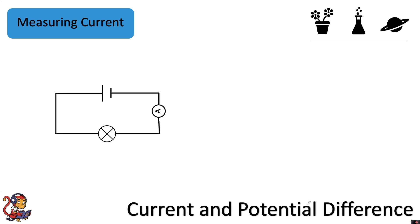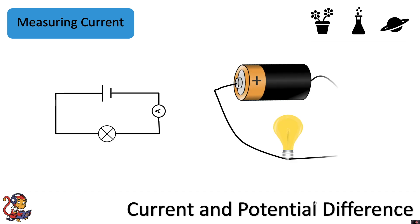So we've seen what this might look like drawn as circuit symbols. In reality when you set up your circuit it might look something like this, with your cell, your lamp and wires connecting to your ammeter.